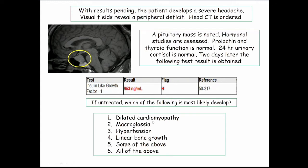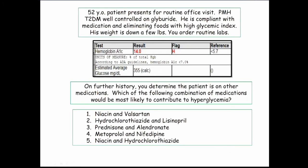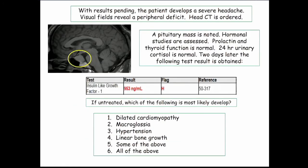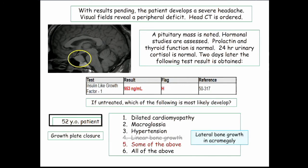If untreated, which is most likely to develop? Cardiomyopathy — yes, that's the cause of death. Macroglossia — that happens from IGF. Hypertension — sure. Linear bone growth? No, because he's 52. I take care of adults. A 52-year-old is not going to get linear bone growth — he's going to get lateral bone growth. The answer is some of the above: cardiomyopathy, macroglossia, hypertension. You do not get linear bone growth; you get lateral bone growth.